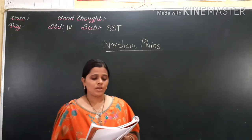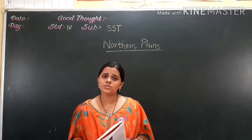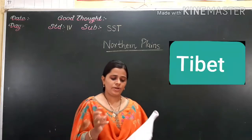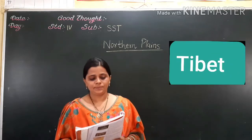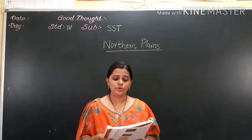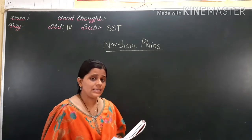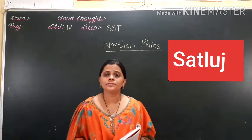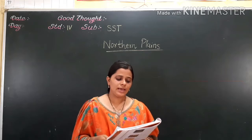Second: the river Brahmaputra starts from where? From Tibet. So in front of Tibet, we put a tick mark. Next: the Bhakra Nangal Dam is built on which river? The answer is Sutlej. Tick mark Sutlej.